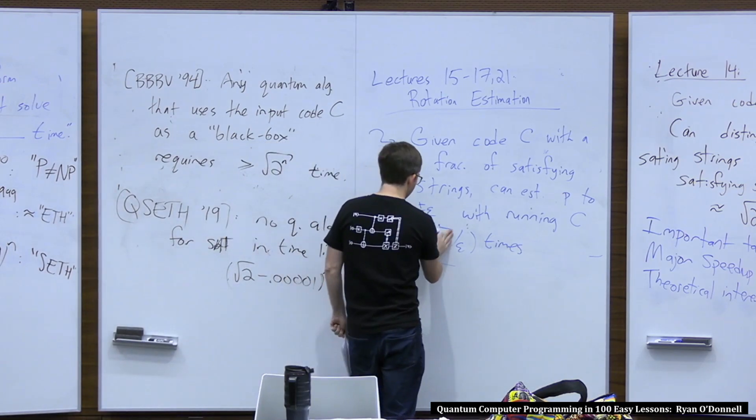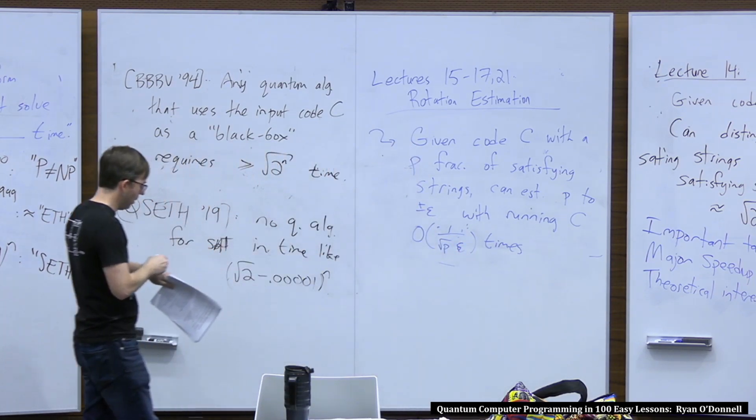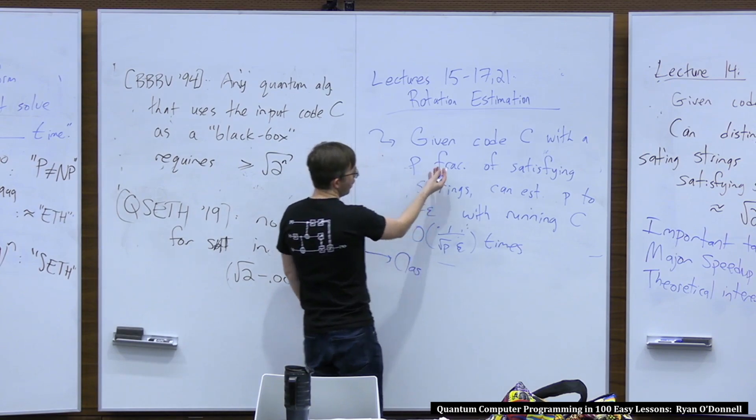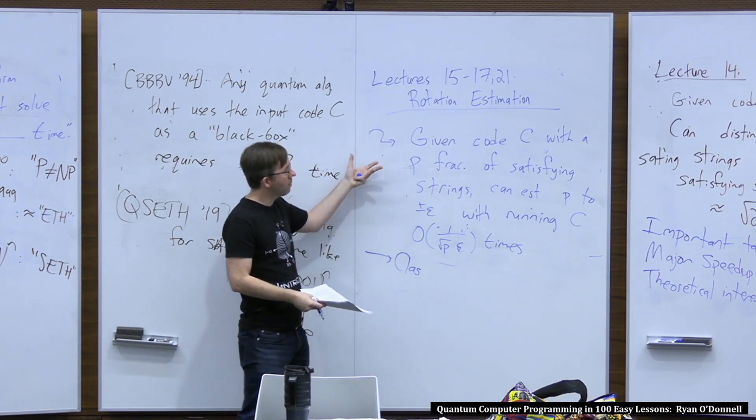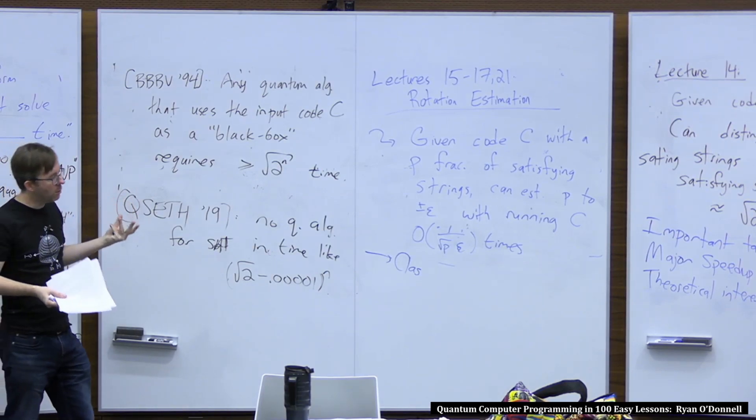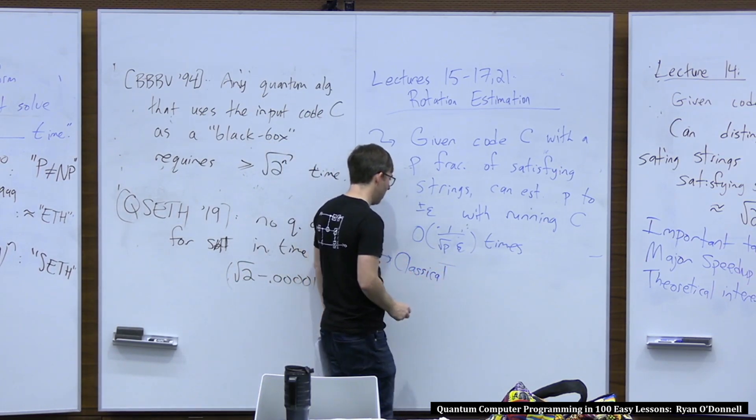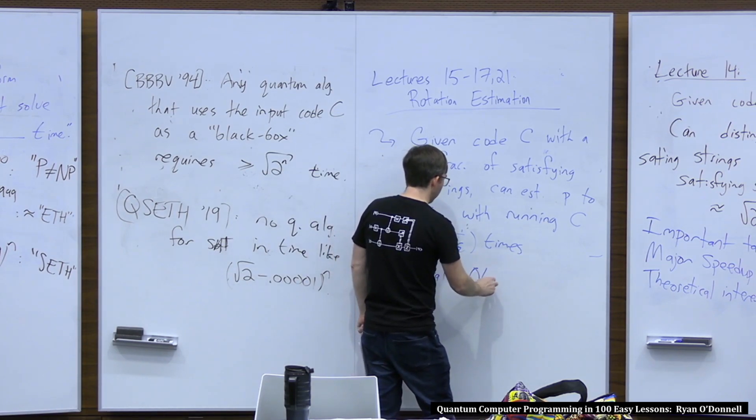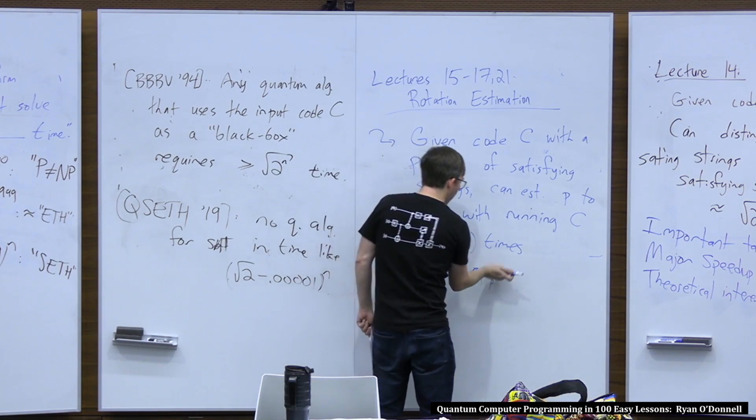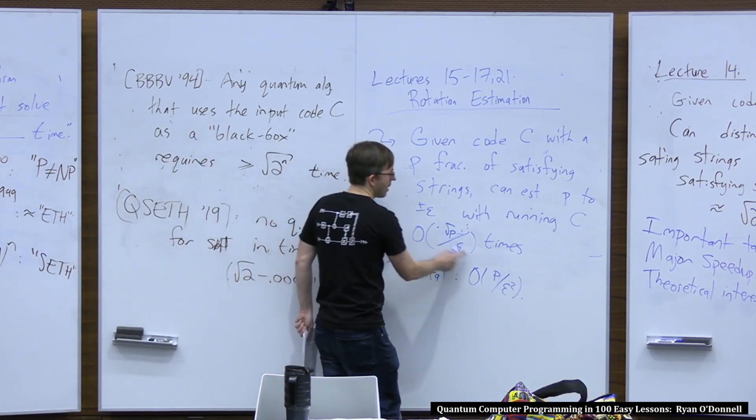Maybe it's a little hard to interpret. Wait, sorry, this should be down here, one over square root P epsilon. Should make a note, fix that in the notes. Just going to say, classical algorithms. For this kind of task, you have some code that returns zero or one. You want to estimate what fraction of strings make it output one. The obvious classical way to do it is just pick a bunch of random strings, plug them into C, see what fraction of times it outputs one.